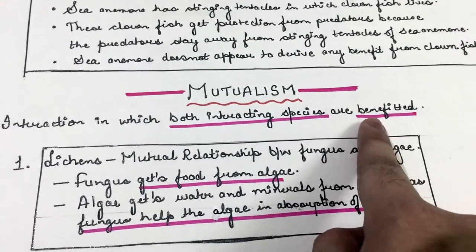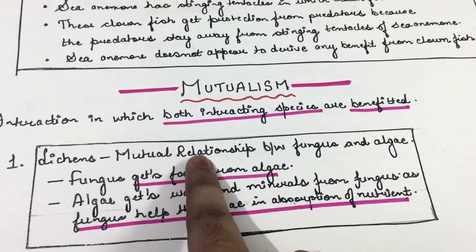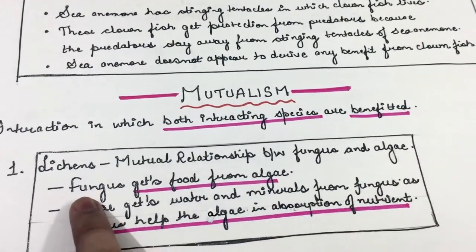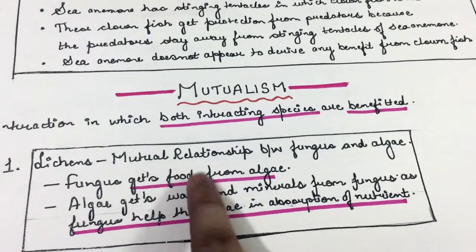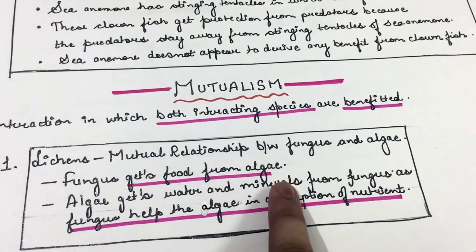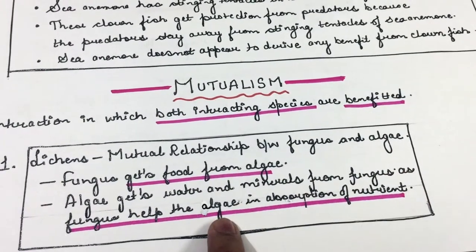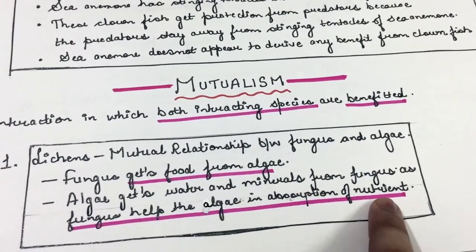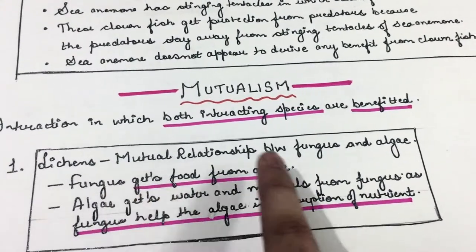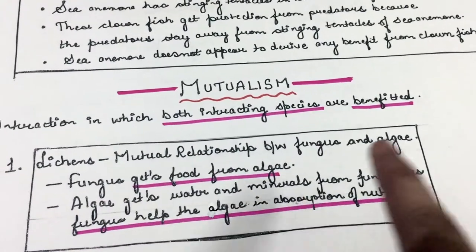For example, lichens represent a mutualistic relationship between fungus and algae. The fungus gets food from the algae, and the algae gets water and minerals from the fungus, as the fungus helps the algae in the absorption of nutrients. So both are benefited.